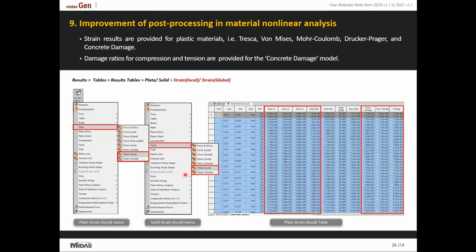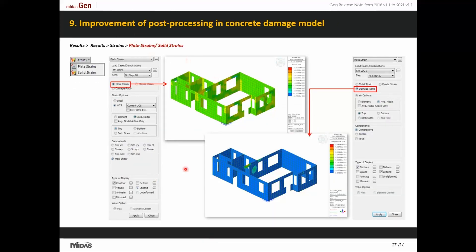Strain results can now be obtained for plastic materials for the Tresca model, Von Mises, Mohr-Coulomb, Drucker-Prager, and concrete damage model. Moreover, damage ratios for compression and tension as well as the stress-strain curve for the concrete damage model can be provided separately.